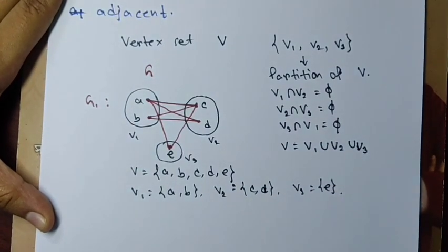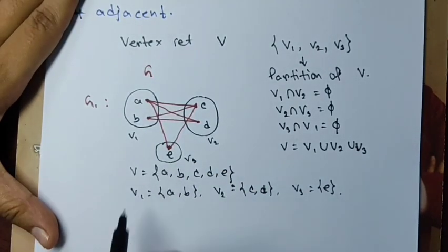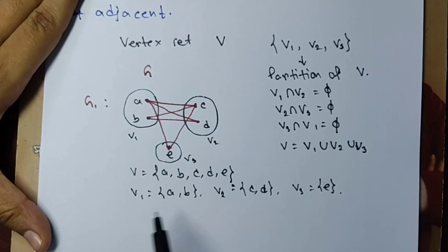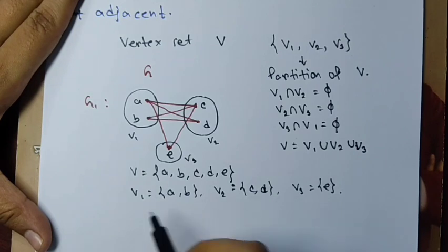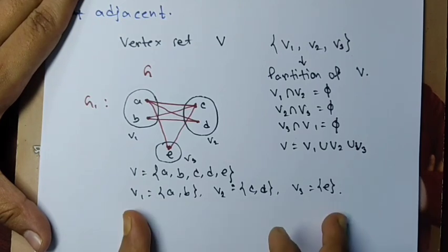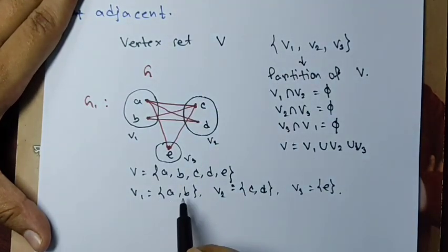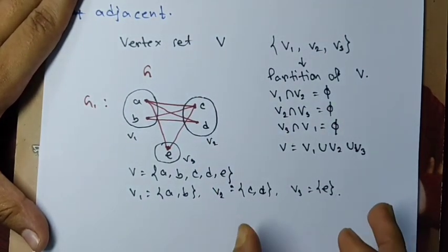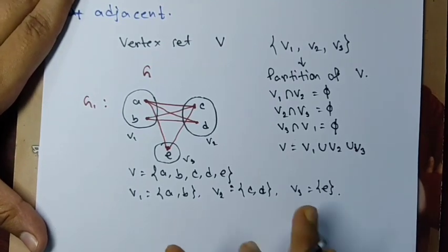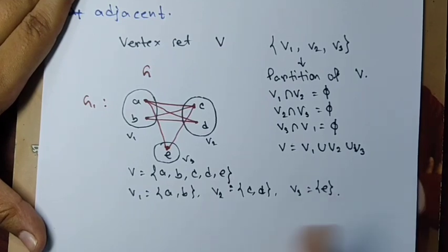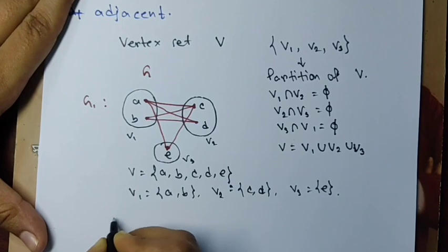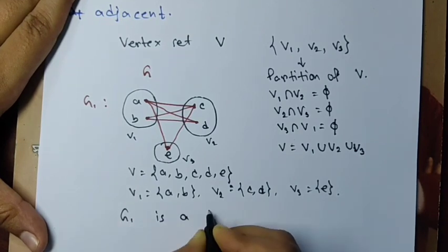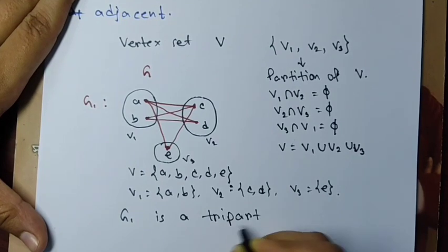V1, V2, and V3 form a partition of the vertex set V because their union is V and their pairwise intersections are empty. We also check: in V1, a and b are not adjacent; in V2, c and d are not adjacent; and V3 has only one vertex e, so no two vertices in V3 are adjacent. Therefore, G1 is a tripartite graph.